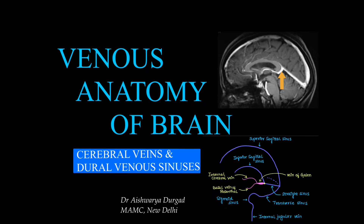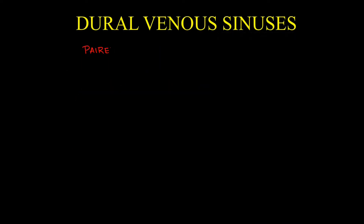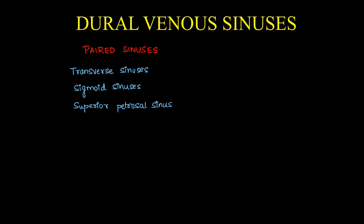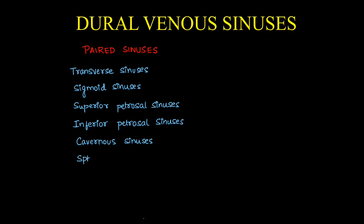To begin with, let's learn about dural venous sinuses. Dural venous sinuses are of two types: paired and unpaired. Paired sinuses are transverse sinus, sigmoid sinus, superior petrosal sinuses, inferior petrosal sinuses, cavernous sinus, and sphenoparietal sinuses. These are all divided into right and left.